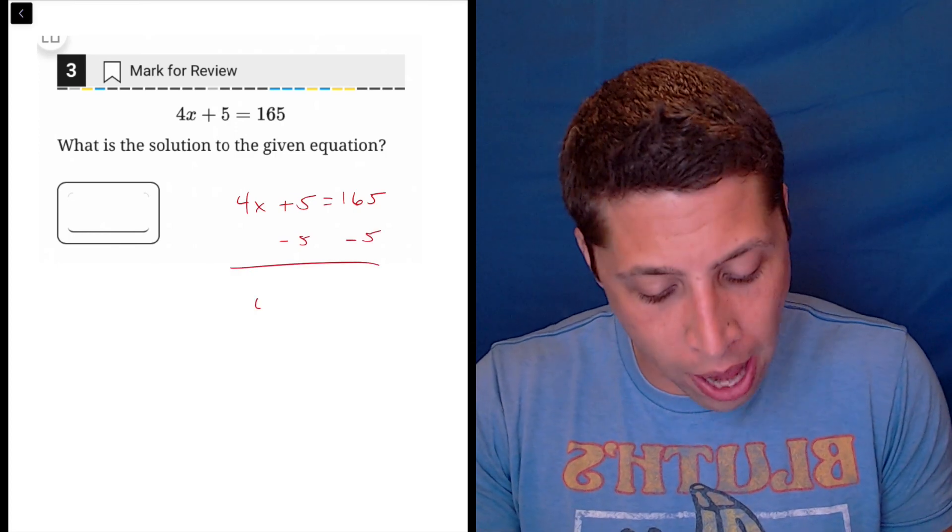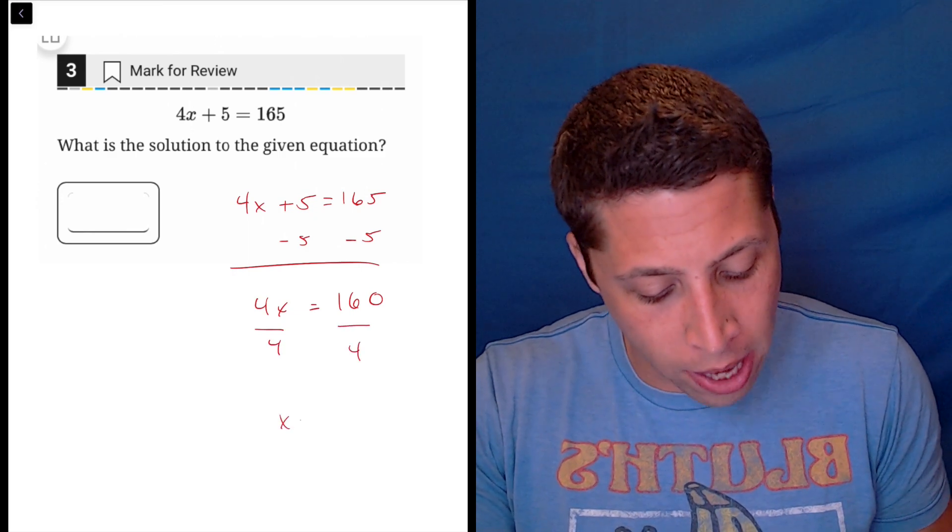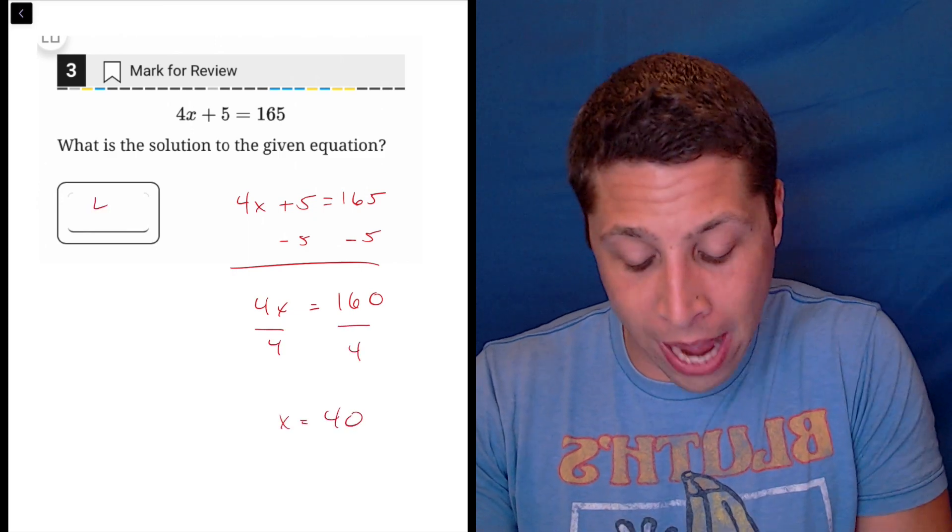We would subtract 5 from both sides. We would get 4x is equal to 160 and then divide both sides by 4. And even without a calculator, it's going to be x is 40.